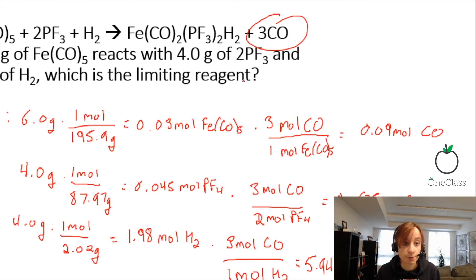So to figure out which one is the limiting reagent, it is the reactant that gives the less moles of product. As PF3 gives 0.0675 moles of CO, the lowest number, PF3 is our limiting reagent in this situation.